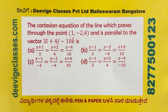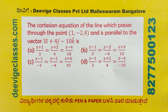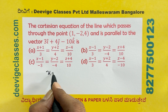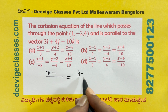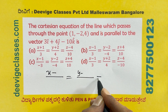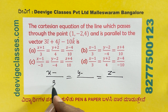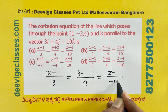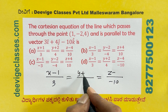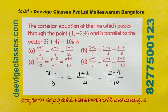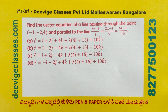The Cartesian equation of the line which passes through the point (1, minus 2, 4) and is parallel to the vector 3i plus 4j minus 10k. The numerators are 1, minus 2, 4 and the denominators are 3, 4, minus 10. So: x minus 1 over 3 equals y plus 2 over 4 equals z minus 4 over minus 10.